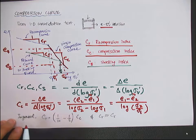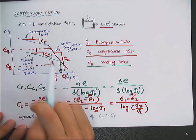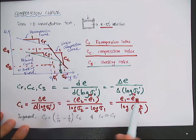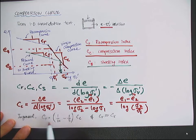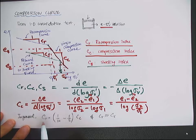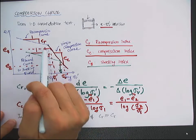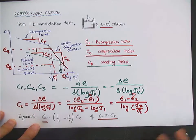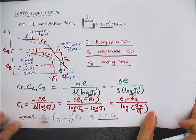In general, the recompression index is much smaller than the compression index — about one-fifth to one-tenth of the compression index. The recompression index CR is quite similar to the swelling index CS.